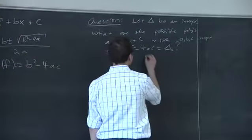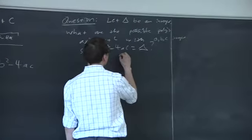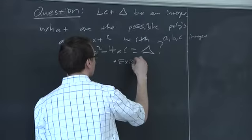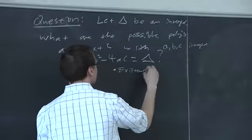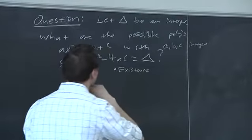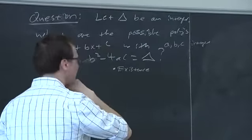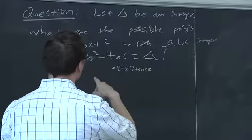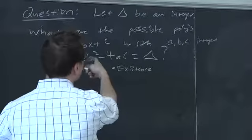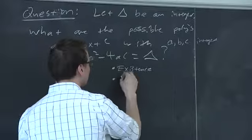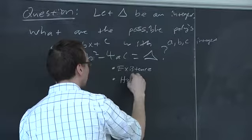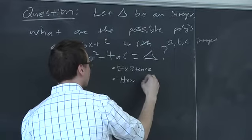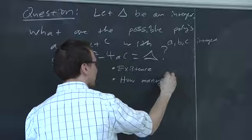I guess there are two things. One is existence — in other words, is there any polynomial with the given discriminant? And then the other one would be, if there are any, how many, for a given delta?